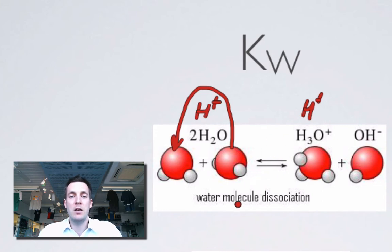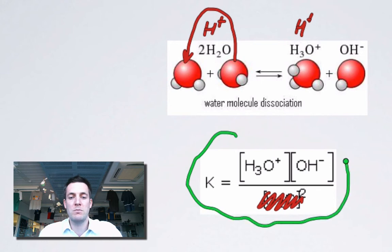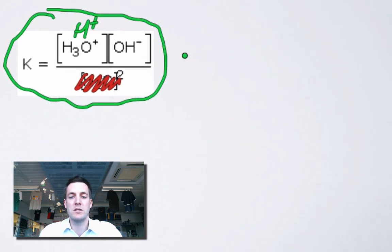If I write an equilibrium constant for this, I multiply the concentrations of the products and divide by the concentrations of the reactants raised to the stoichiometric power. But I'm not going to put the concentration of water there because it doesn't change—it's a liquid. So my equilibrium constant for water ends up being the concentration of H plus multiplied by the concentration of OH minus, and that equals 1 times 10 to the minus 14.